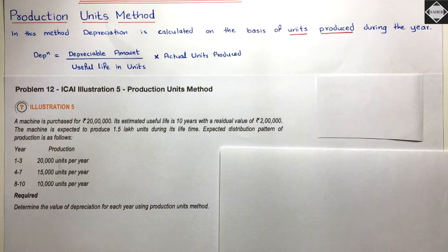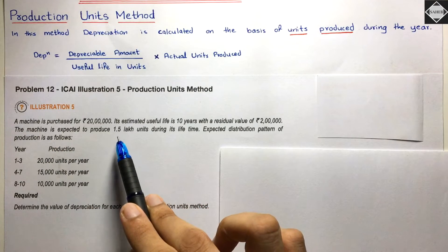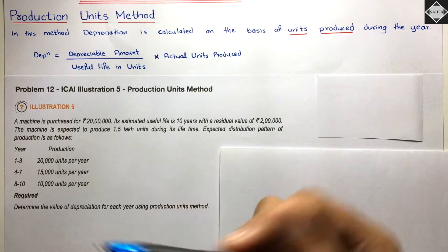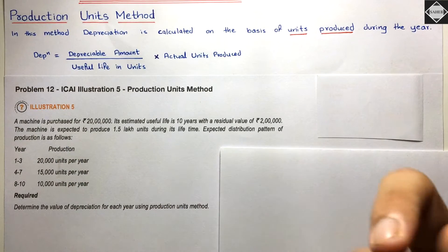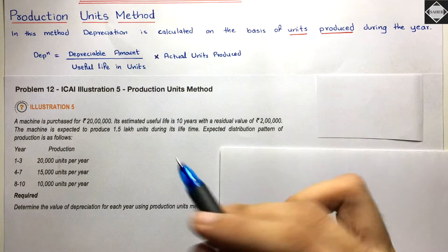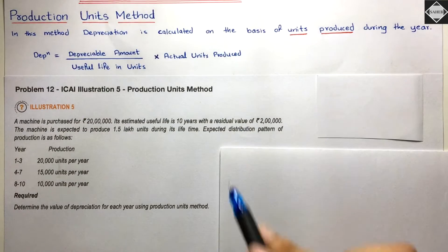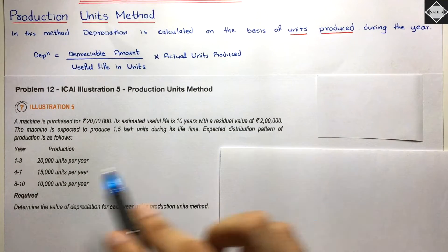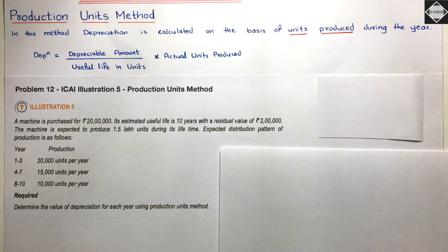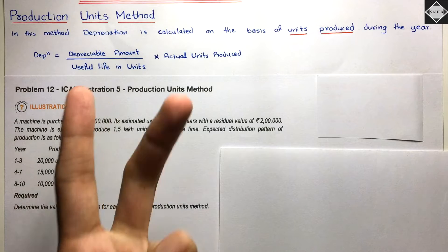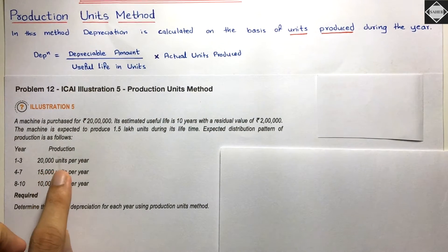The machine is expected to produce 1.5 lakh units (1,50,000 units) during its lifetime — that is our useful life in units, which is the denominator. The expected distribution pattern of production is given for the first three years, the next four years, and the last three years.